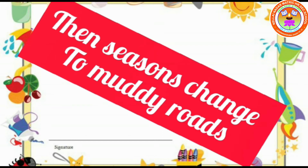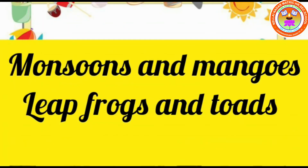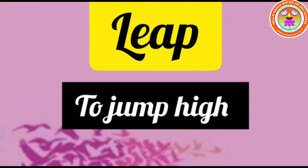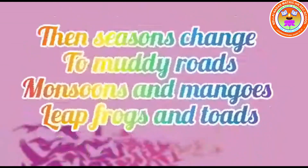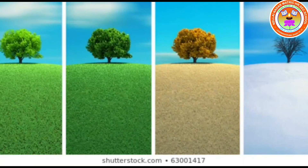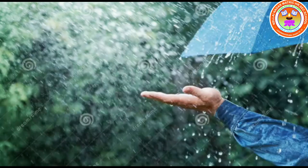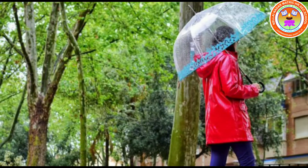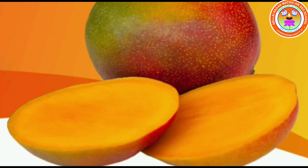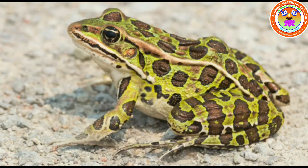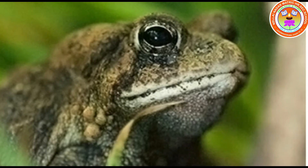Then seasons change to muddy roads, monsoons and mangoes, leapfrogs and toads. The meaning for leap is to jump high. A toad is a small brown animal similar to a frog. After a period of time, the seasons change. Monsoons come in, bringing muddy roads everywhere. The monsoons cause rainfall and ripe mangoes are seen in abundance. The frogs play in the water and jump high. Toads hop happily around.